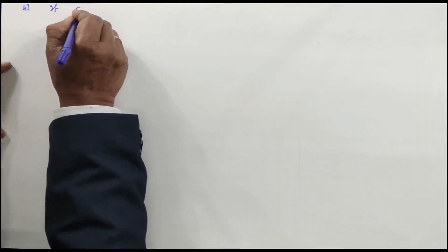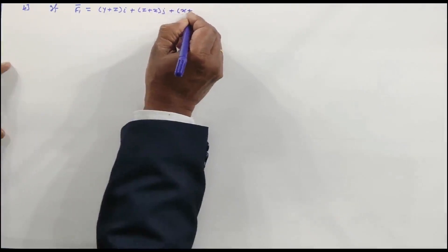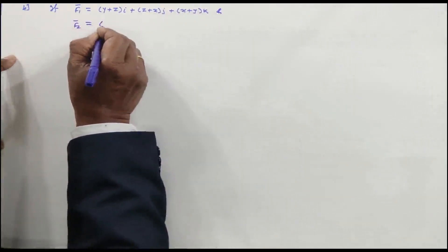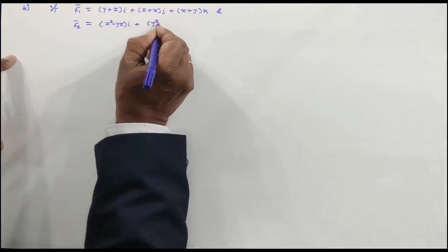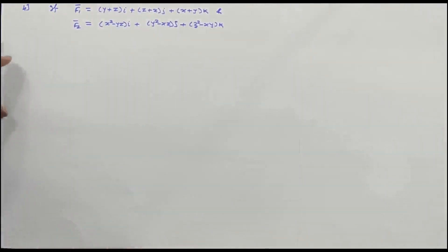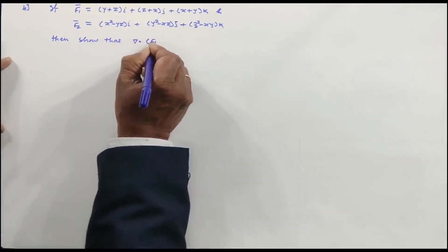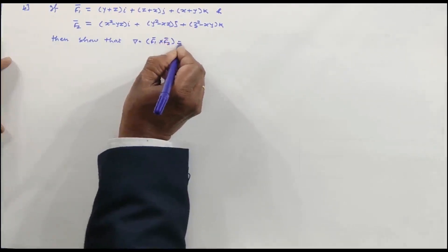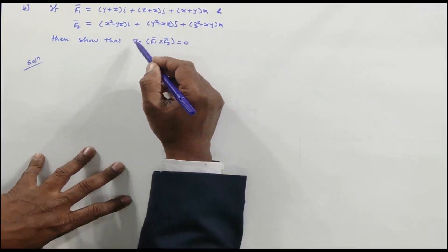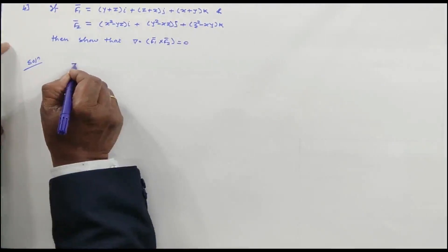Next problem: given F̄₁ = (y+z)i + (z+x)j + (x+y)k and F̄₂ = (x²-yz)i + (y²-xz)j + (z²-xy)k, show that del · (F̄₁ × F̄₂) = 0. One approach is to find F̄₁ × F̄₂ first and then take its divergence. Alternatively, to minimize computation, use the scalar triple product property.